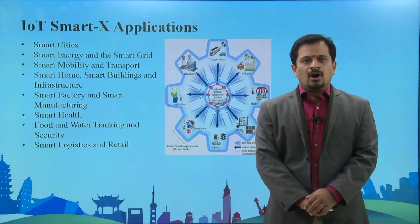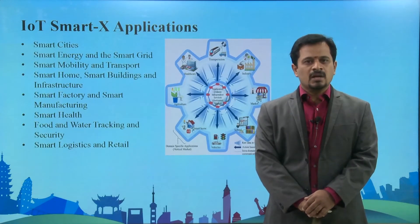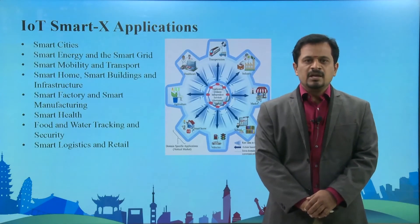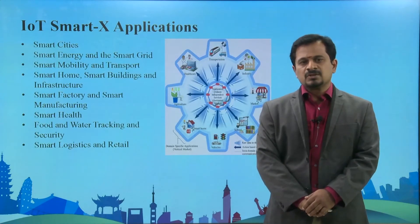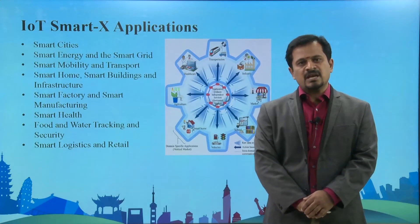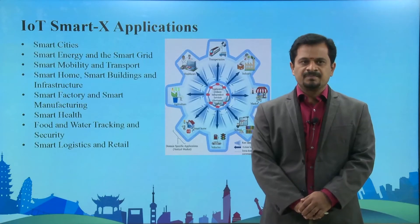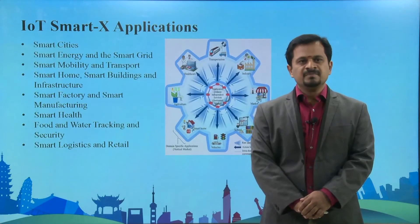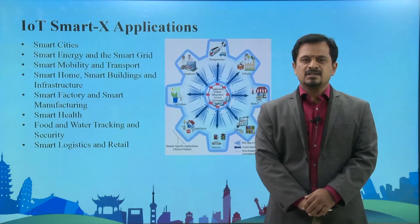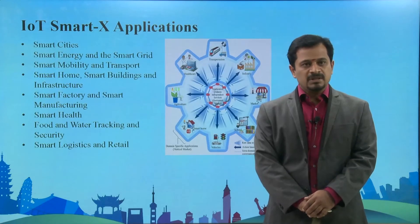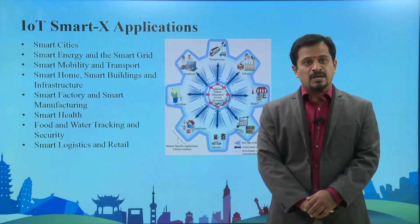This IoT Smart X is diversifying across all domains. It is not restricted to the information and communication technology domain alone; irrespective of any domain, this can be used — starting from smart cities, smart energy, smart grid, smart mobility and transport.